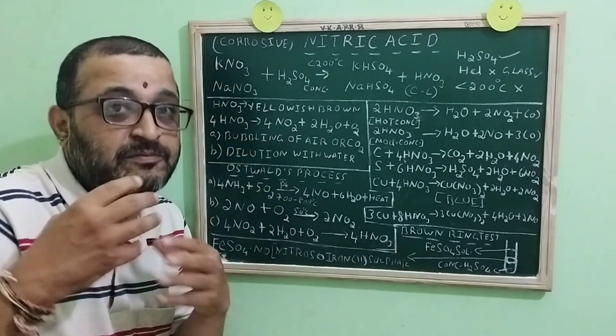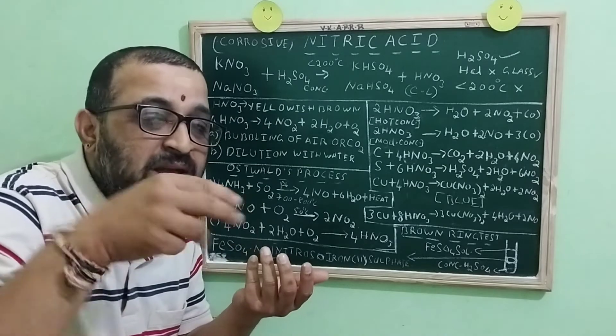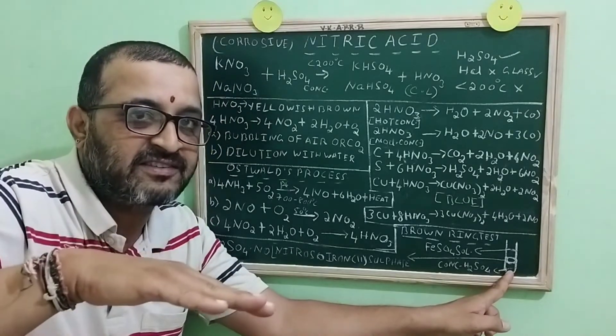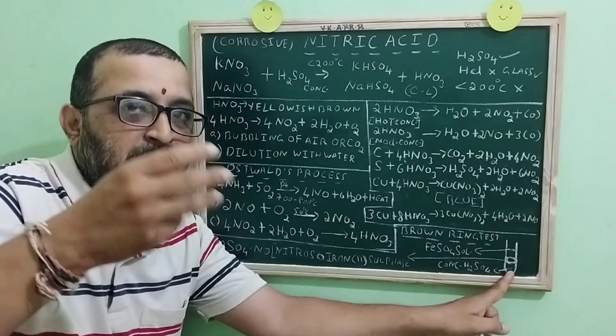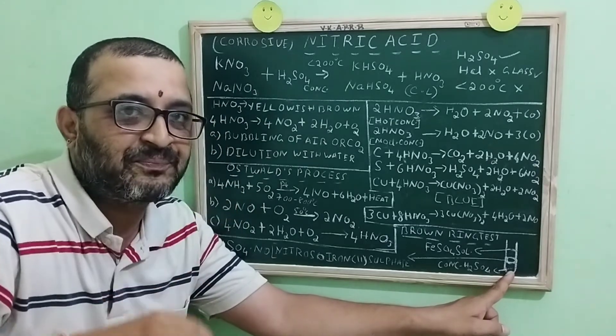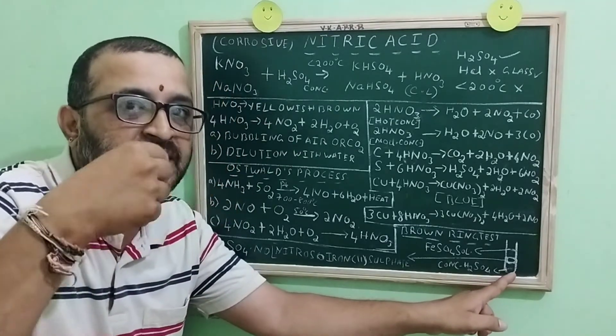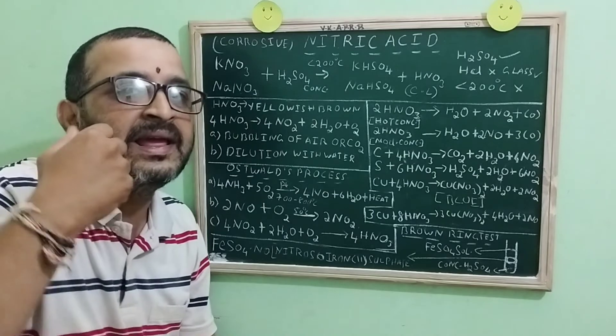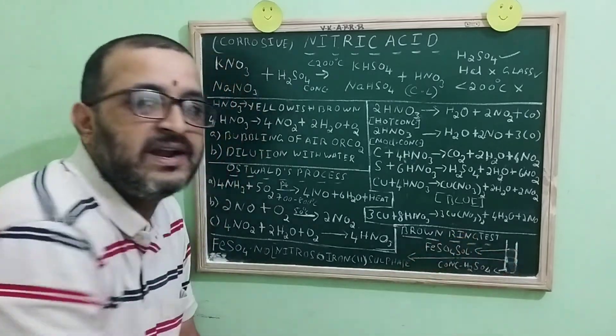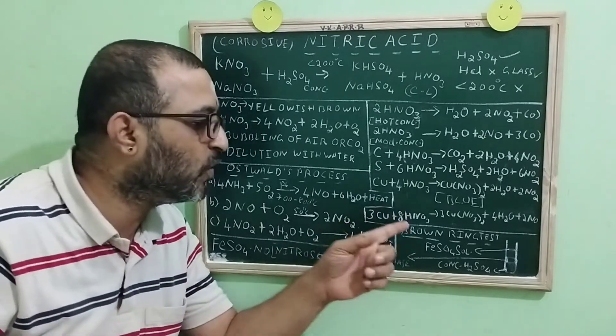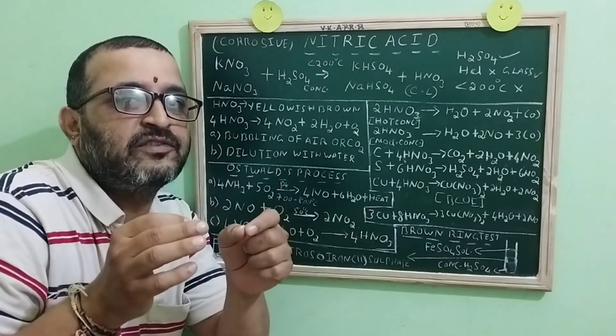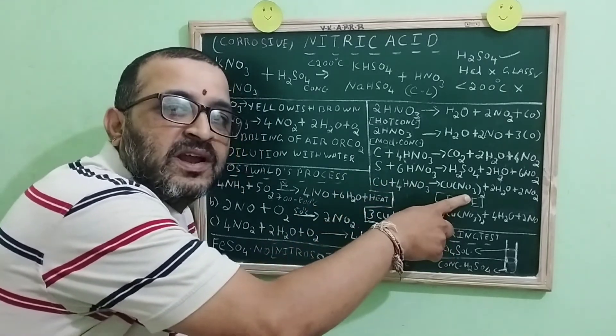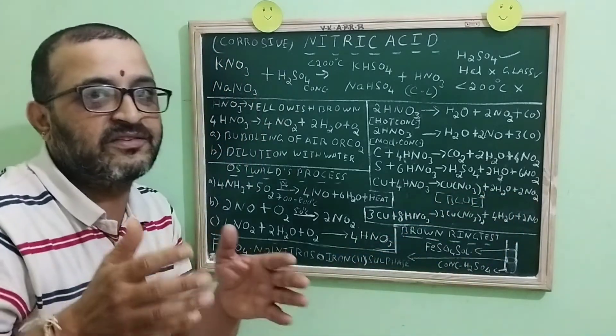Important question with respect to the brown ring test. Why does the brown ring disappear on shaking the test tube? Very simple. We have concentrated sulfuric acid in the bottom. We prepared ferrous sulfate solution by dissolving salt in water. On disturbing the test tube, concentrated sulfuric acid will further mix with the water. Then heat is liberated. That heat will decompose the brown ring. This brown ring test is the most important test for nitric acid, along with copper with nitric acid to produce blue color copper nitrate and reddish brown nitrogen dioxide.